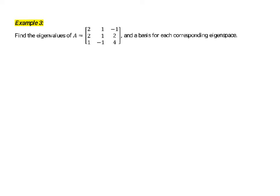In the first part of this example, we're asked to find the eigenvalues for this given matrix. To find the eigenvalues for a matrix, we need to look at the characteristic equation, which is det(A minus lambda I) equals zero. That's where you find the eigenvalues for a matrix.